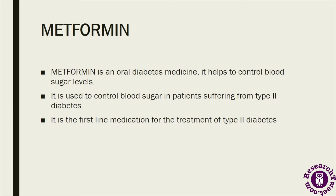Diabetes is a genetic disorder caused in several types of patients in which the blood sugar levels increase or decrease. Basically, diabetes is of two types: type 1 diabetes and type 2 diabetes. Type 2 diabetes is also known as adult onset diabetes, where the patient suffers from high blood sugar and a relative lack of insulin.